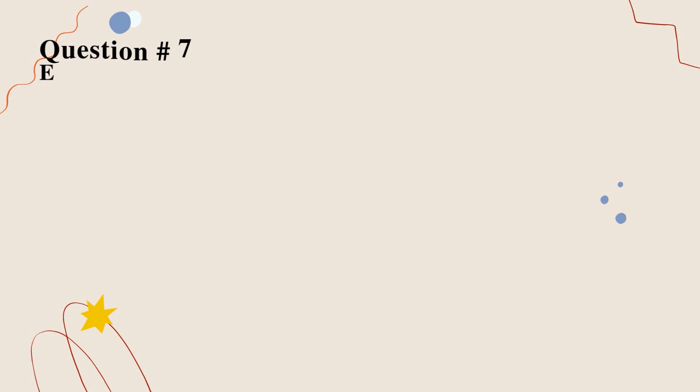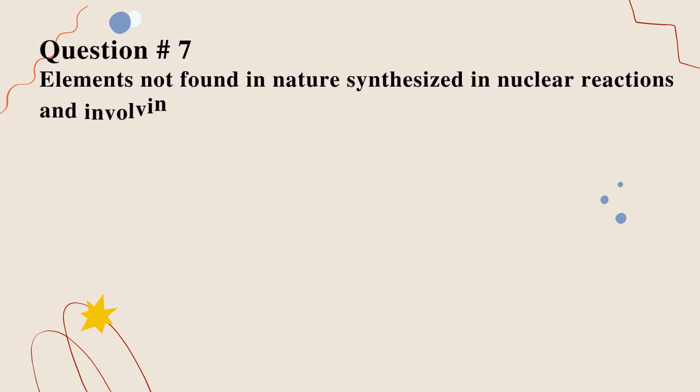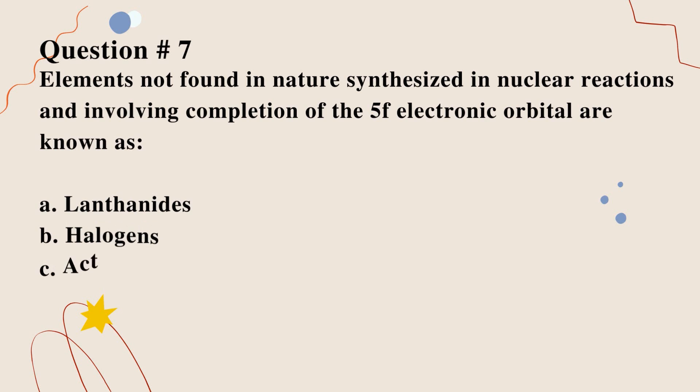Question number 7. Elements not found in nature synthesized in nuclear reactions and involving completion of the 5F electronic orbital are known as: A. Lanthanides. B. Halogens. C. Actinides. D. Transition metals. Correct option is C.